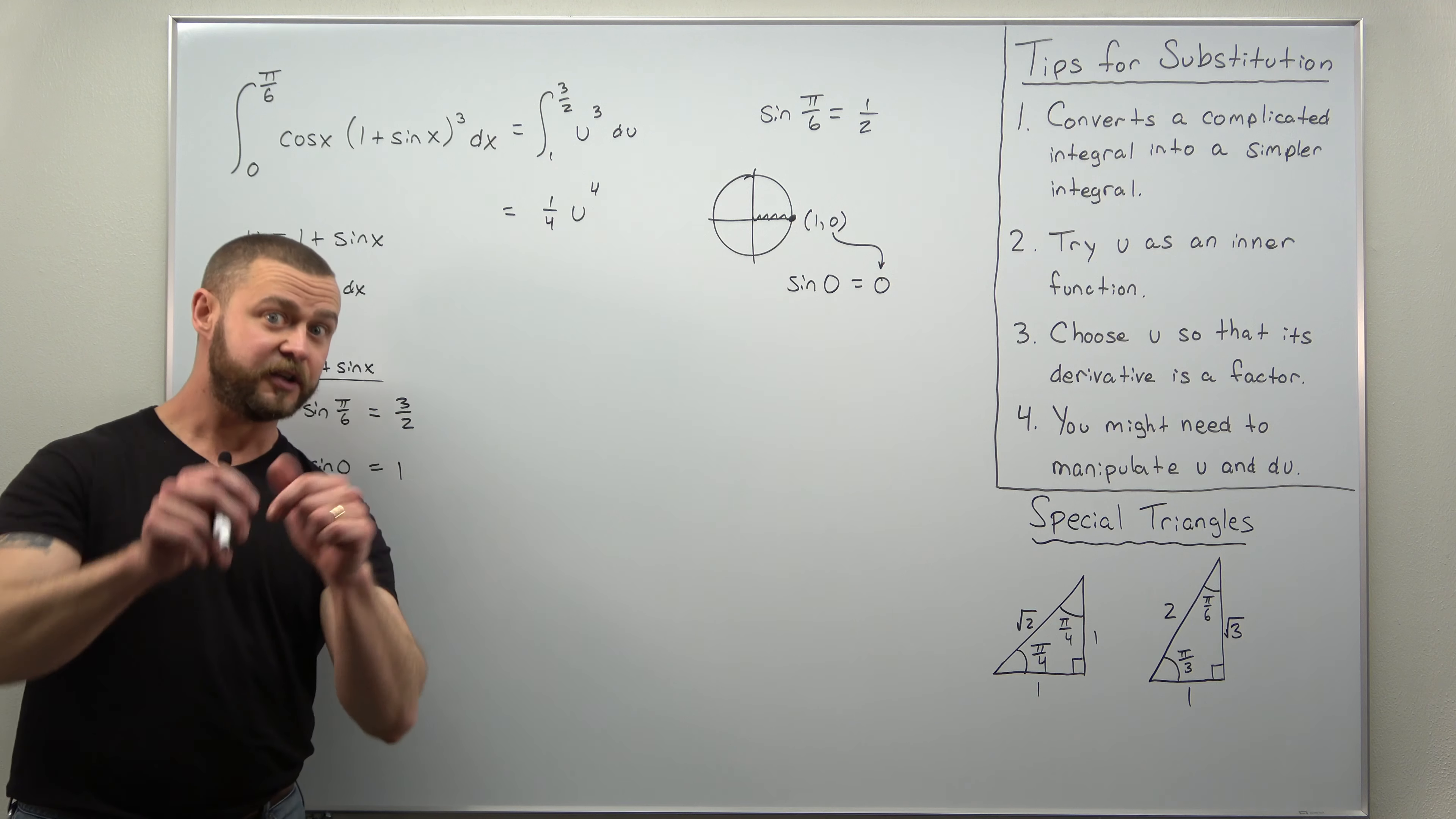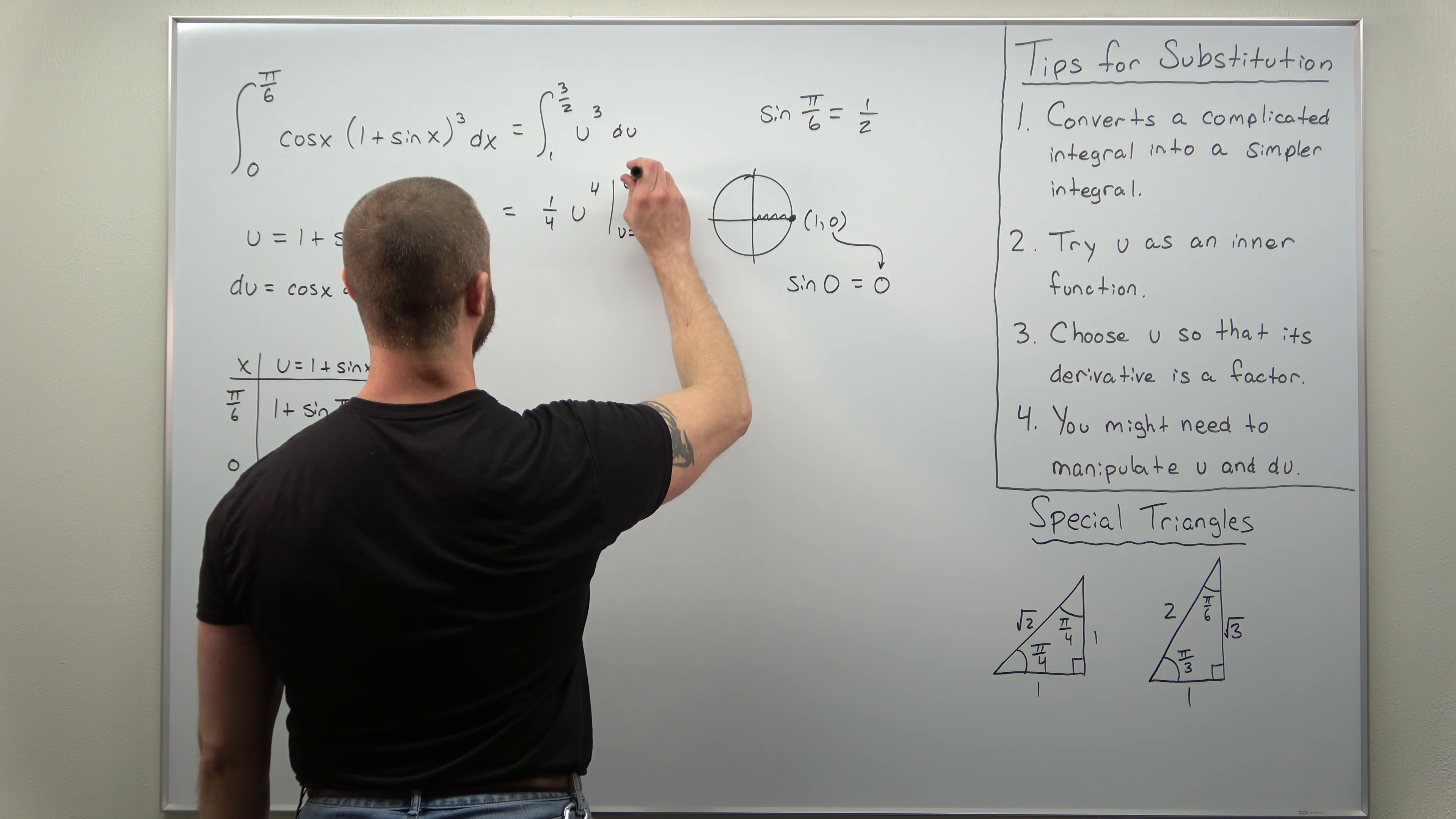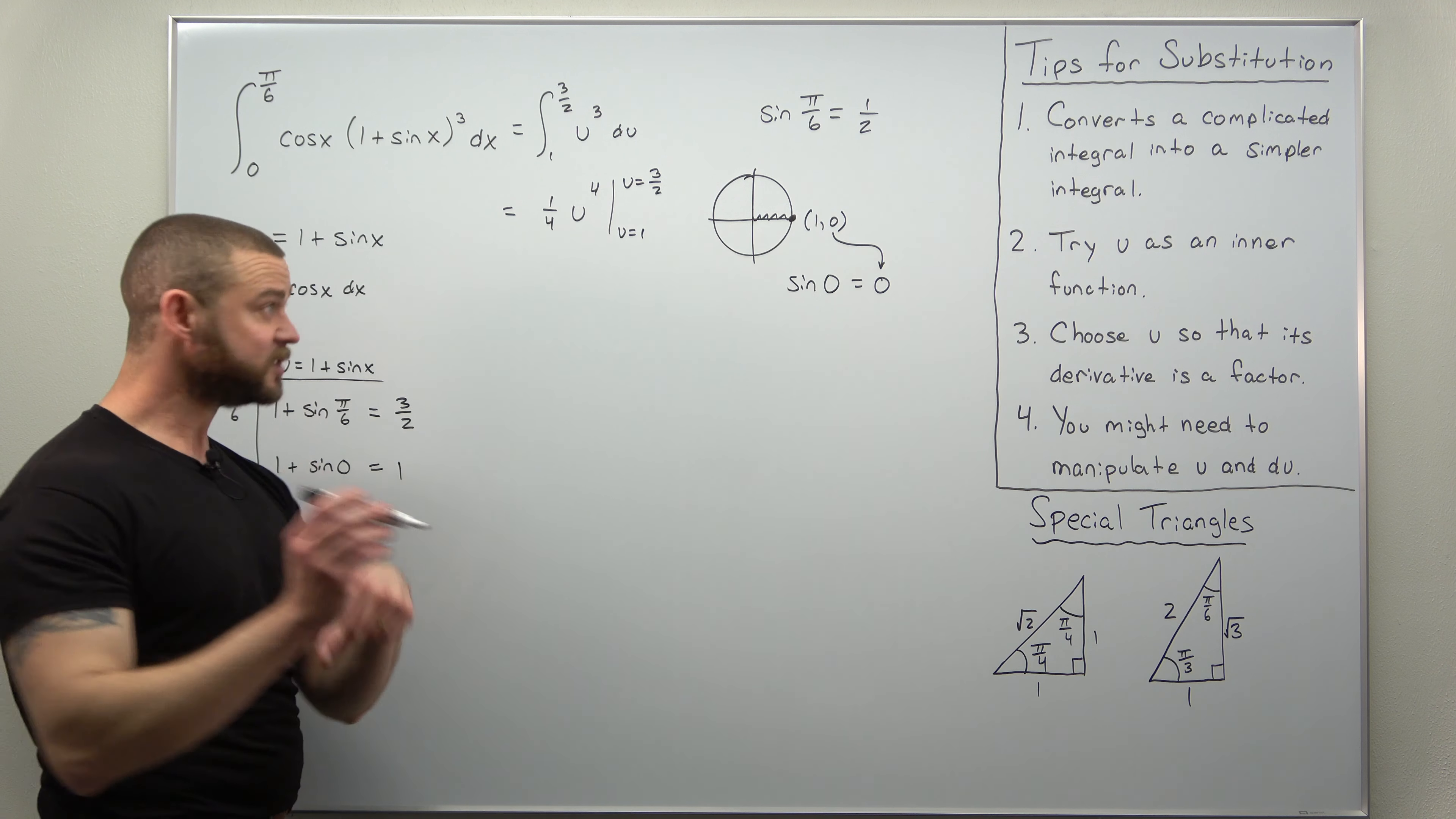So here we're going to evaluate this from u equals 1 to u equals three halves. With the fundamental theorem of calculus, with your anti-derivative, plug in each limit and subtract.